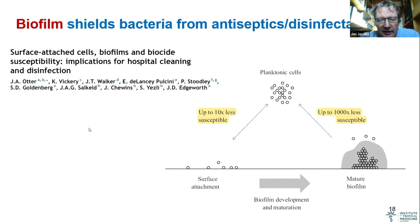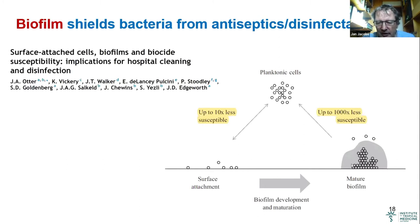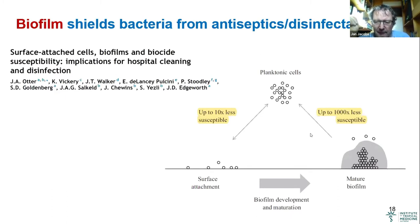Another point is that a biofilm shields bacteria from antiseptics and disinfectants. A biofilm means that bacteria attach to the surface — the surface of a plastic container, a stethoscope, a keyboard — they start to grow a little bit and produce extracellular proteins and carbohydrates which form a protective layer. This is what we call a biofilm. It can sometimes be visible to the naked eye, but sometimes it is too small to see. In the biofilm, bacteria are up to a thousand times less susceptible to antiseptics and disinfectants.